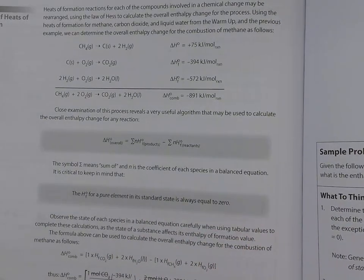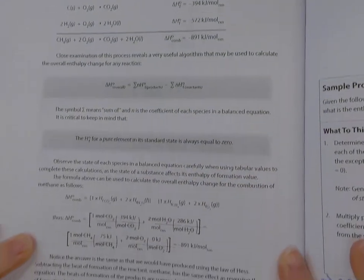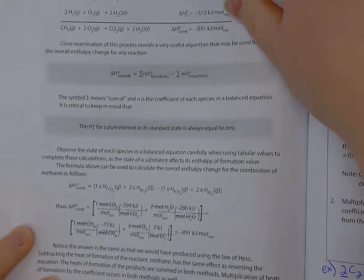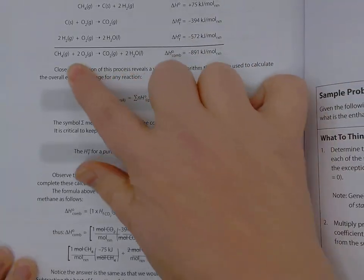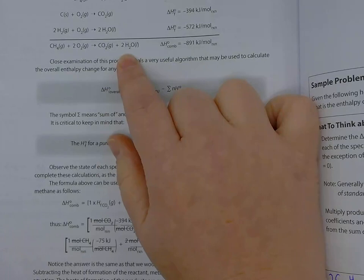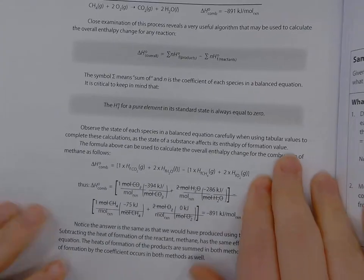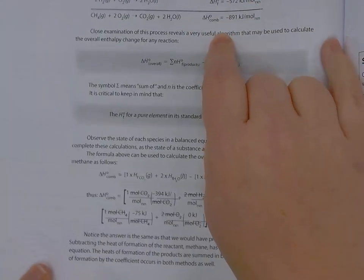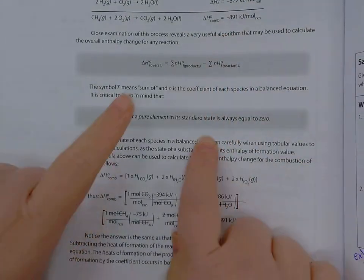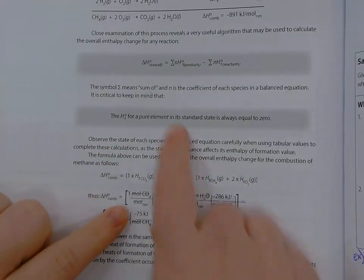So if we take that, we can plug in. Using that same chemical reaction, this one, we can plug in all the chemicals and their delta H values from the table on the next page and find the overall delta H of the reaction. So if we look, it's products minus reactants. So our first product is CO2.